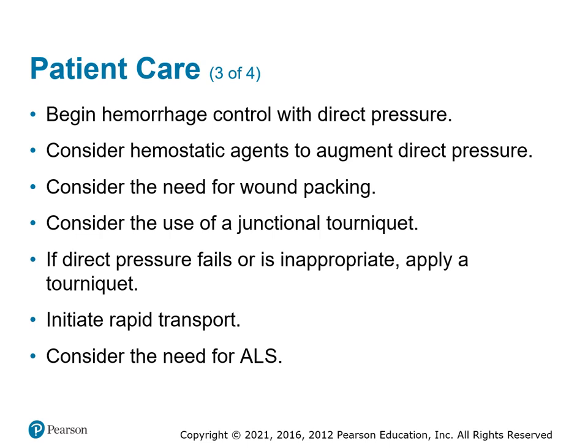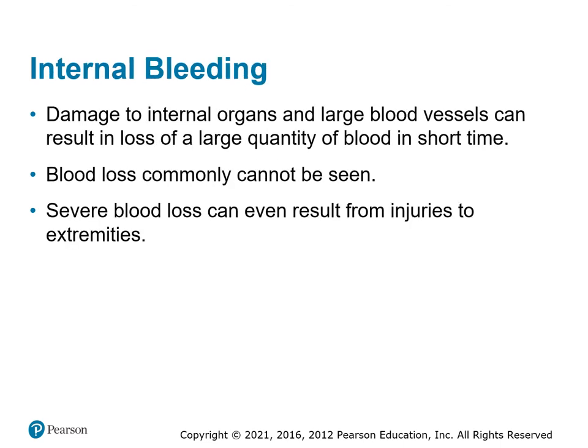Start with direct pressure, then progress to hemostatic agents, wound packing, and tourniquets as needed. There is no judgment on method as long as you stop the bleeding before the patient dies. Call ALS and transport rapidly. For internal bleeding, which is harder to stop, identify the potential and get the patient to appropriate care as quickly as possible. A patient can bleed up to a liter into each leg or several liters into the abdomen from a single injury, so identifying internal bleeding risk and getting to the right facility is critical.